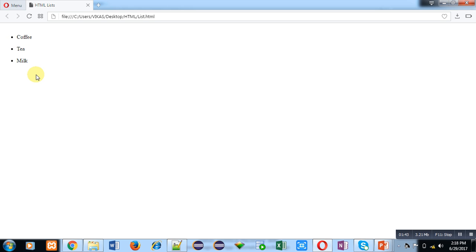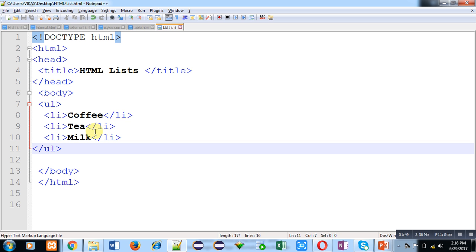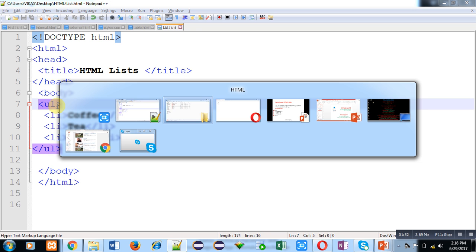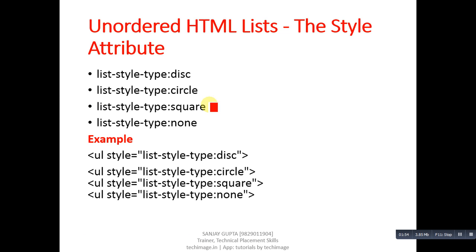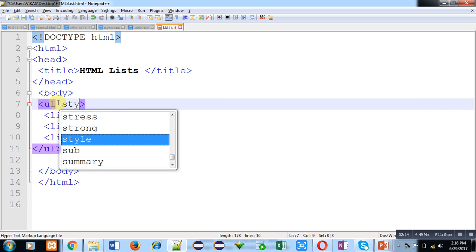If you want to change the list item style, you have to apply a style to it. You can apply: disk, circle, square, or none — meaning no bullet or circle will be displayed in front of the list item. Now I am going to apply the second type: list-style-type circle, in my code.